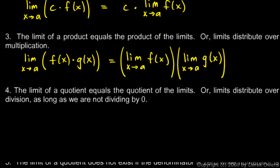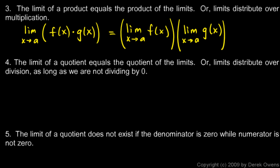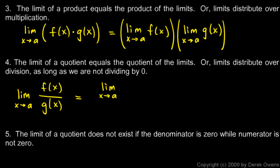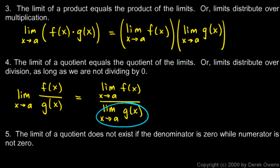Number four: the limit of a quotient equals the quotient of the limits. The limit as x approaches a of f(x)/g(x) equals the limit as x approaches a of f(x) divided by the limit as x approaches a of g(x). That's valid as long as this denominator is not zero.